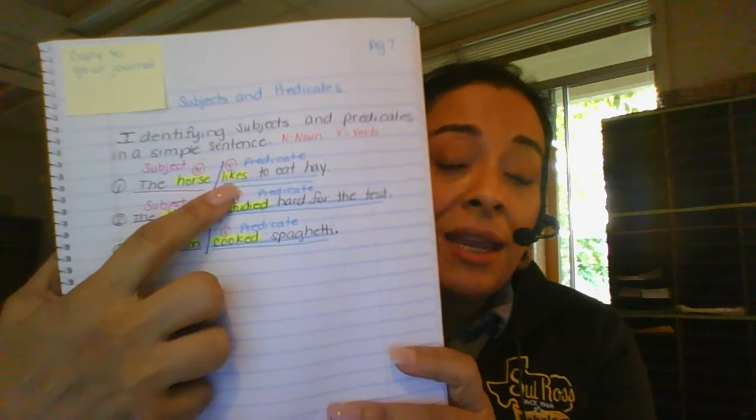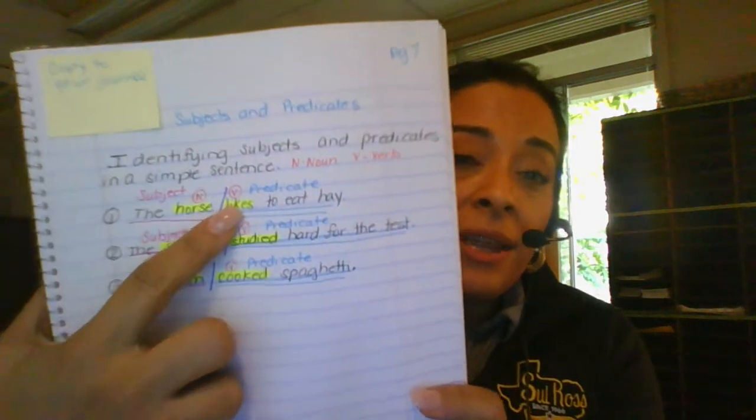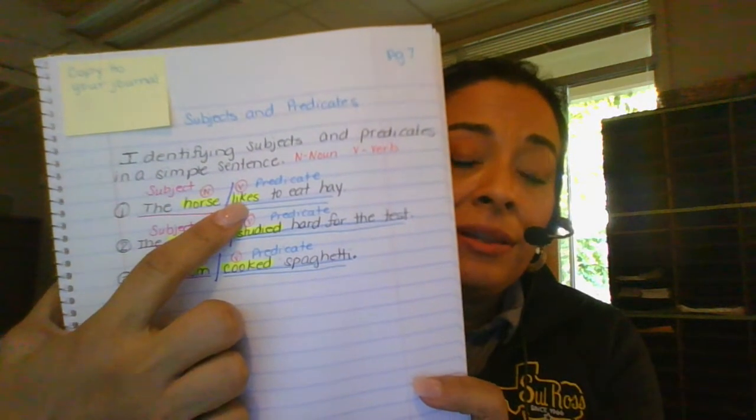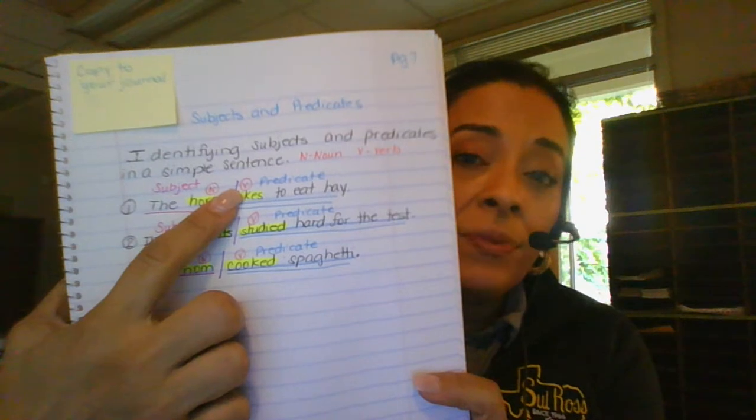Likes to eat hay is what the horse did, so that is called the predicate. But I did highlight the word likes and I identified it as a verb or B.